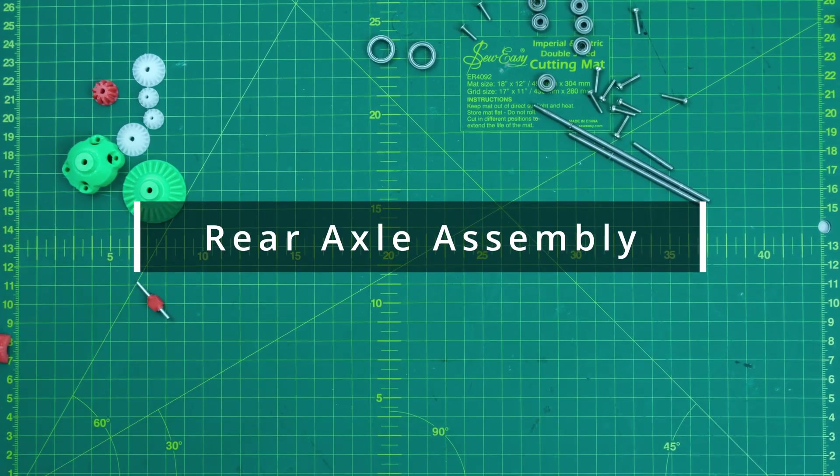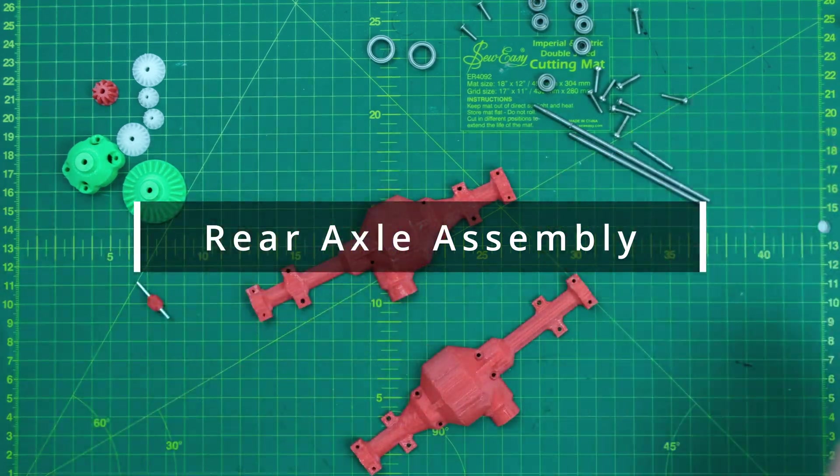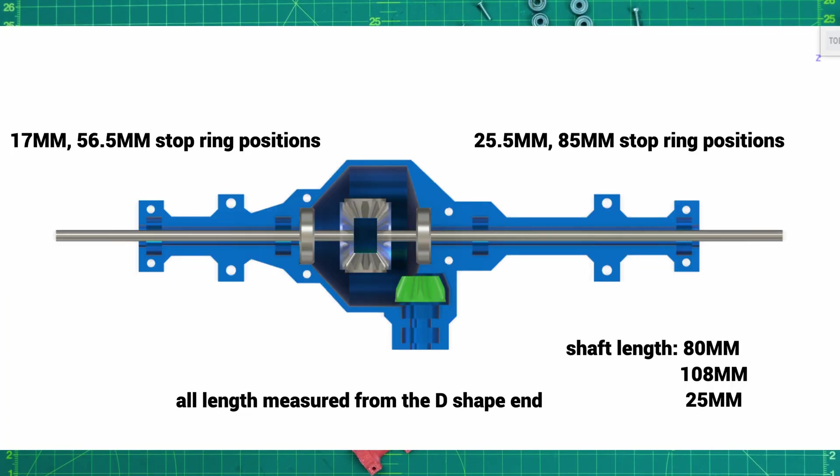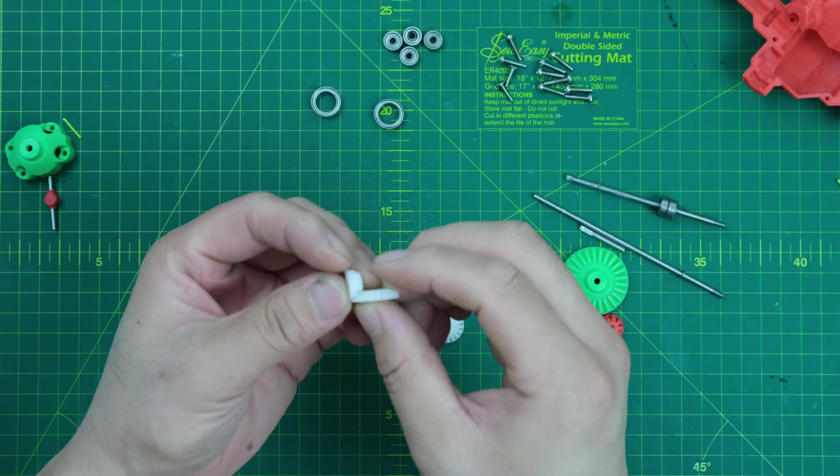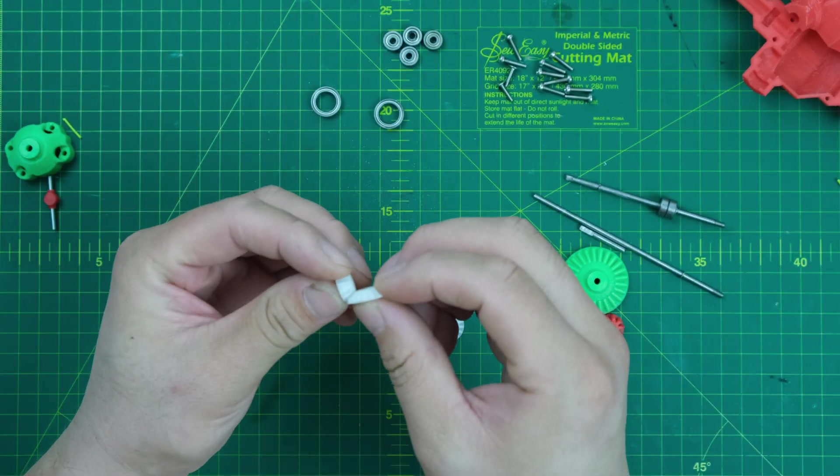Alright, let's get back to my workbench. You guys see a number of parts here, some 3D printed parts and some metal parts. Make sure your 3D printer is calibrated, otherwise the gears won't work properly.